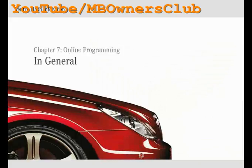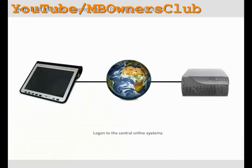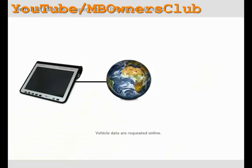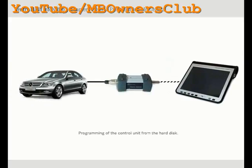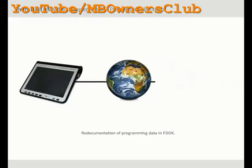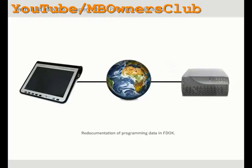In this chapter you will find out how online programming works in general. Online programming also starts with a logon to the central vehicle documentation systems and tests to ensure that the systems respond. The determination of the latest vehicle data is performed online in FDOC. The communication of the latest vehicle data is followed by a check to determine whether the control unit is programmable. If this is the case, the programming of the control unit from the hard disk follows. For documentation purposes, information on the control unit software is re-documented in FDOC.